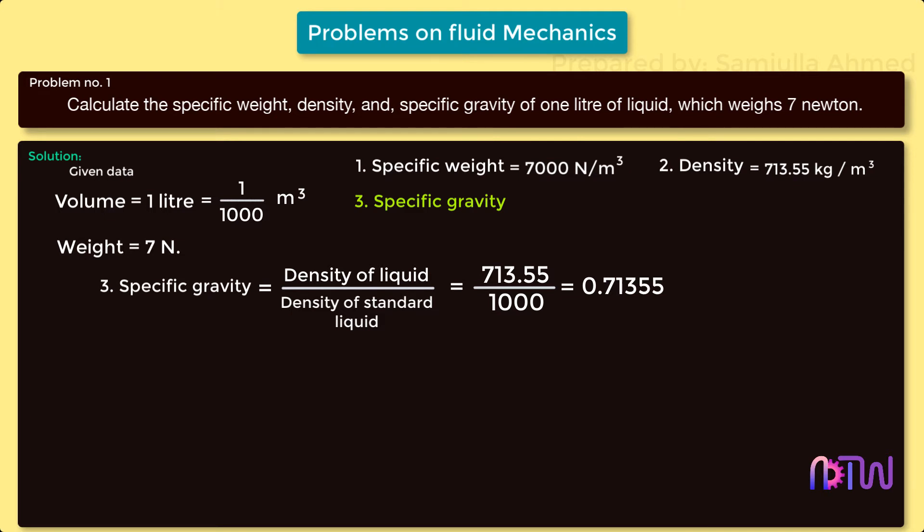Hence we have found out the specific weight, density, and specific gravity of the liquid having weight 7 newtons and volume 1 liter.